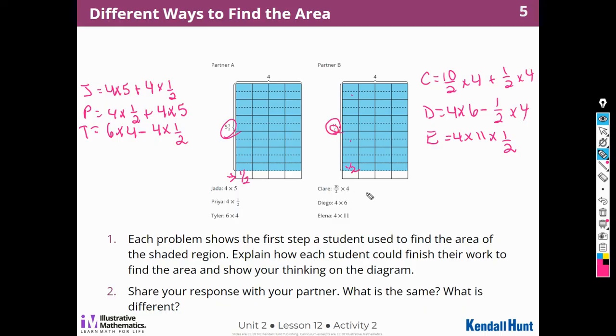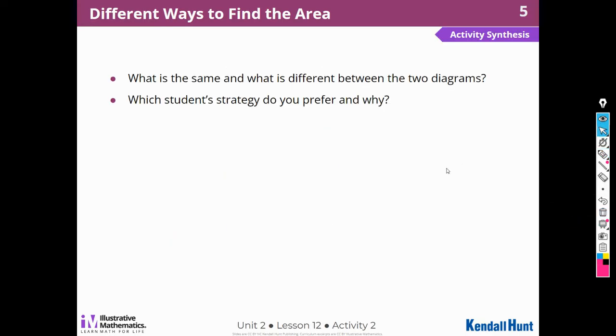So share your responses with your friends. Did you get what I got? Did you get what she got? Did you get what he got? Right. Good thinking. What is the same and what is the difference between the two diagrams? Which student strategy do you prefer? Well, the difference was one had 11 over 2 on the one side and the other had 5 and a half. I think I prefer 5 and a half. I can see it a little bit easier for me.